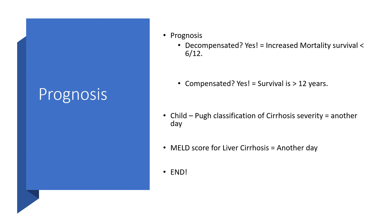If there is decompensation, expect increased mortality — survival in liver cirrhosis with decompensation is less than six months. But if the liver cirrhosis is compensated, survival is greater than 12 years.